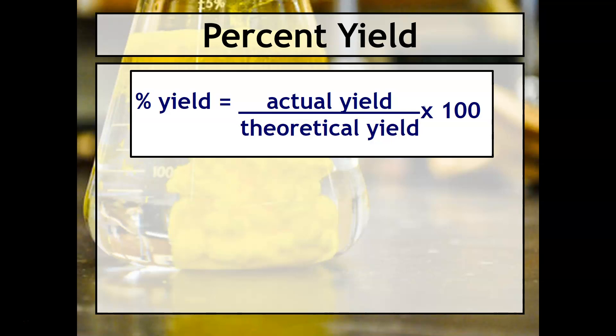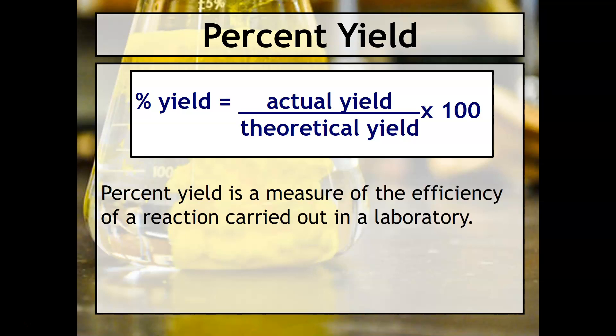To calculate the percent yield, take the actual yield, which is often given in the problem, over the theoretical yield and multiply by 100. Percent yield is considered a measure of the efficiency of the reaction carried out in a laboratory.